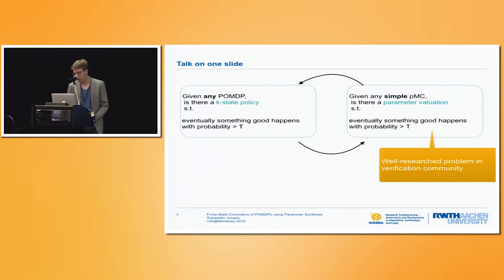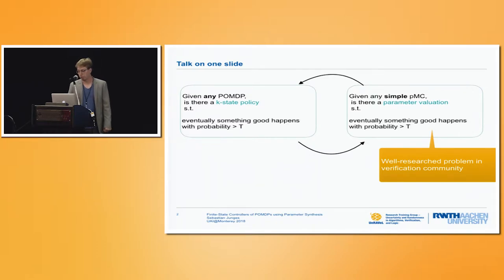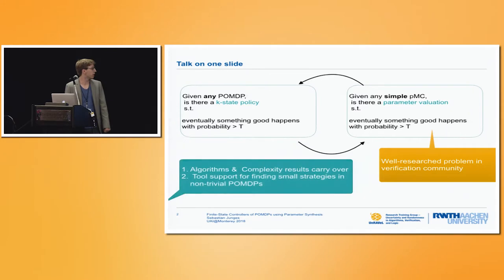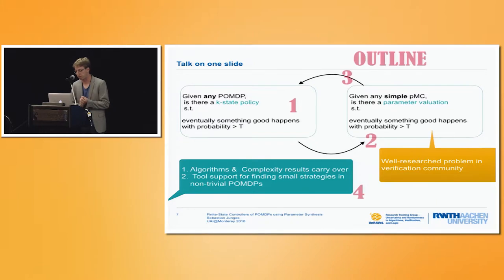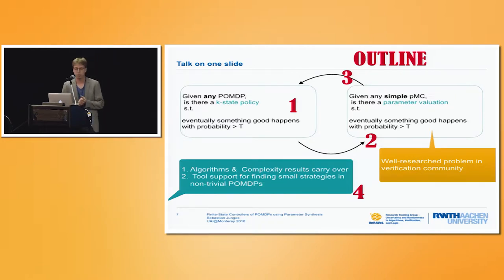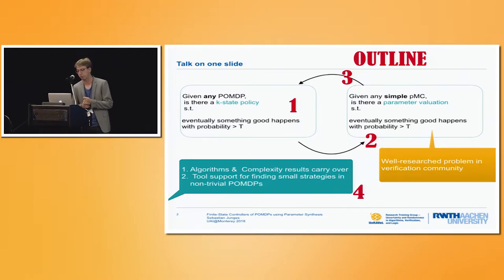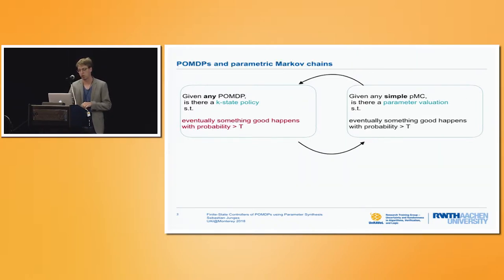The interesting thing is that this reduction goes in two directions, so actually the problems turn out to be equivalent, and that's very helpful. We can profit from things such as complexity results carrying over and using tool support for finding small strategies by using the tool support for parameter synthesis. The rest of the talk will cover the problem statement, how this reduction works, the introduction to the parameter synthesis problem, the equivalence of the two problems, and some of the results that carry over.